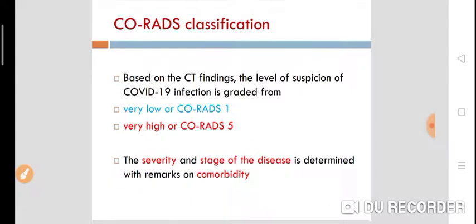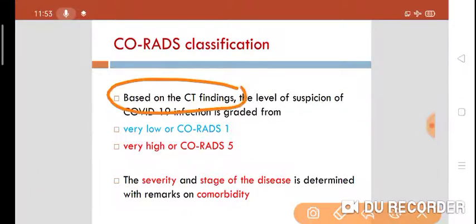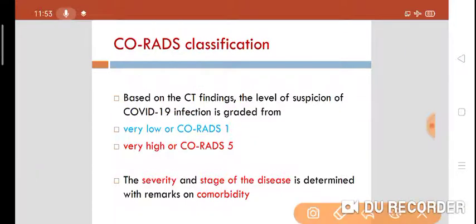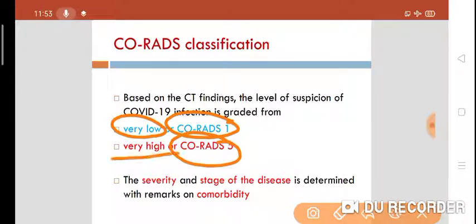CO-RADS classification is based on CT findings, where the level of suspicion of COVID-19 infection is graded. When the CO-RADS score is 1, the chances of COVID-19 illness are very low. When the CO-RADS score is 5, the chances are very high. The score number is therefore very important, indicating the level of suspicion of COVID-19 infection.